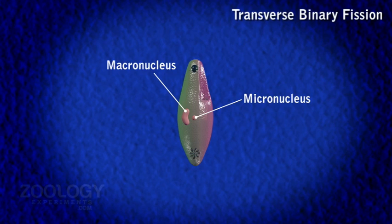Initially, paramecium stops feeding and its oral groove and buccal structures begin to disappear.